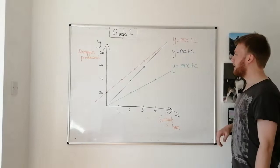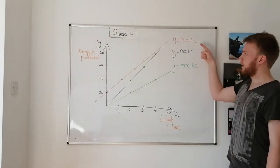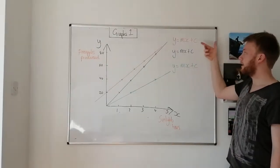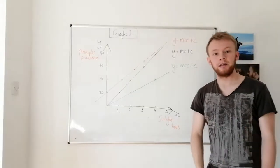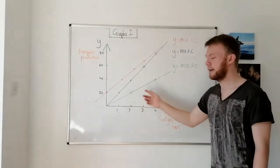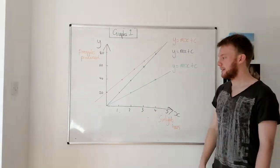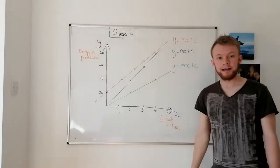Now, you would have met before this equation for a straight line on a graph. Y equals MX plus C. Remember, M is the gradient, and the plus C is the y-intercept.